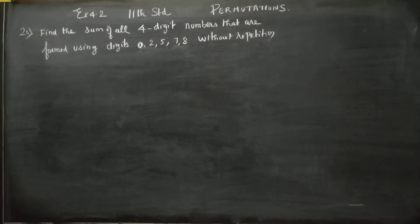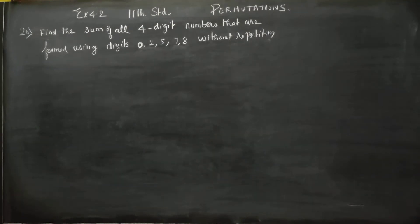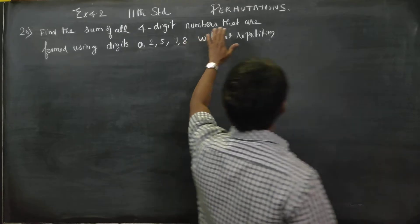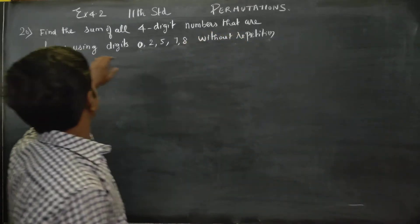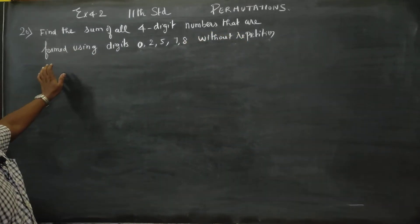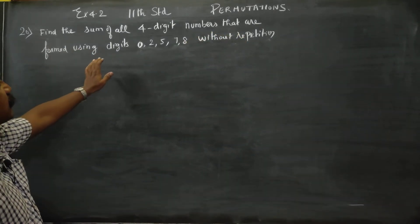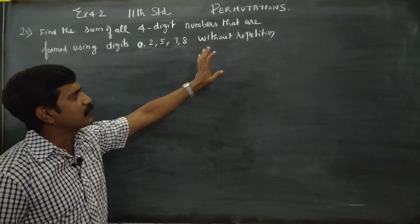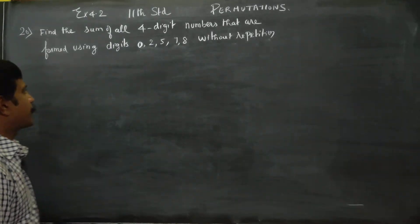Hello, Learn Standard students. In exercise number 4.2, the last sum, sum number 20: find the sum of all four-digit numbers that are formed using the digits 0, 2, 5, 7, 8 without repetition.